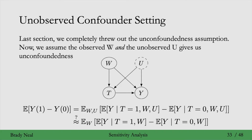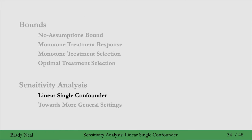Rather than throwing out the unconfoundedness assumption, we're still keeping it, but we only have unconfoundedness given unobserved confounders U. We want to know how close the quantity where we've adjusted for both W and U is to the quantity where we only adjust for W, because W is all we can adjust for — it's the only confounders we've observed. We'll spend most of our time in this simple linear setting with a single confounder.